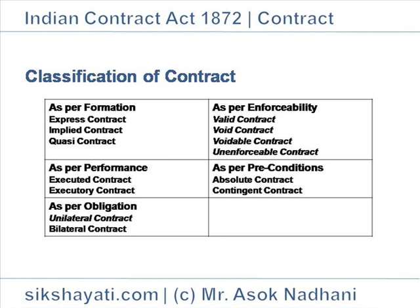Executory Contract example: A agrees to sell B his Maruti car at Rs. 1 lakh. A has to deliver the car to B and B has to pay the price to A. This is an executory contract as both parties have yet to perform their obligations.